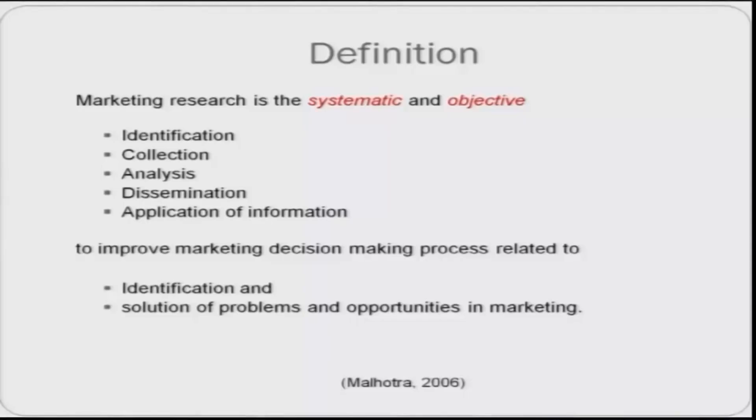Marketing research is an objective and systematic process. It is systematic because it is performed in a sequential or ordered manner. It starts with the determination or identification of the information needed. Then you collect the information required for answering the question. Once you collect it, you analyze it and then disseminate it — you provide it to decision makers in an understandable form. That information is applied for achieving the desirable objectives of the marketing research project, improving marketing decision making related to identification and solution of problems and opportunities in marketing.